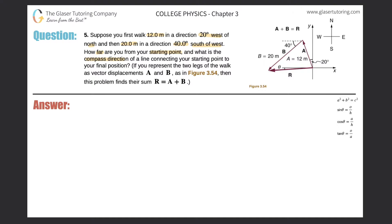Okay, so they give us a diagram on the right-hand side. What I'm going to do is I'm just going to redraw it. The reason why is because there's a lot of letters over there and it's confusing to me. So let's draw a point and take the first piece of information: suppose you first walk 12 meters in a direction 20 degrees west of north.